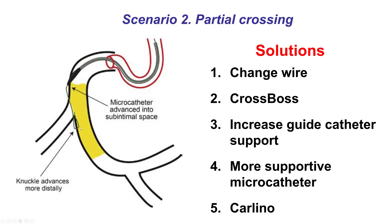If the knuckle stays inside the lesion, the options are to change for a different guide wire — for example, going from a Fielder XT to a Pilot — use the CrossBoss, increase support, or use a different microcatheter. And lastly, potentially do the Carlino technique, in which a small amount, half to one cc of contrast, is injected to create a microdissection and facilitate crossing.